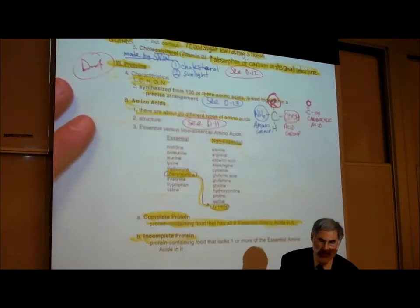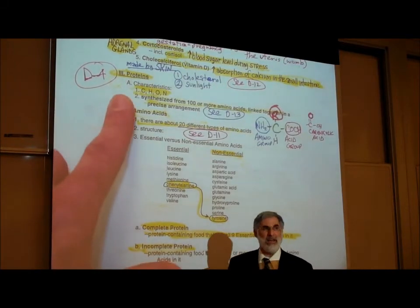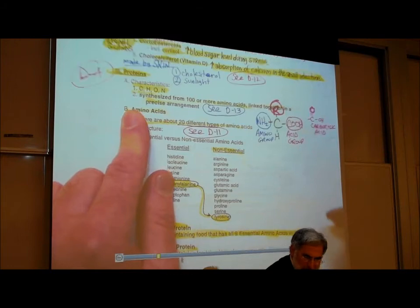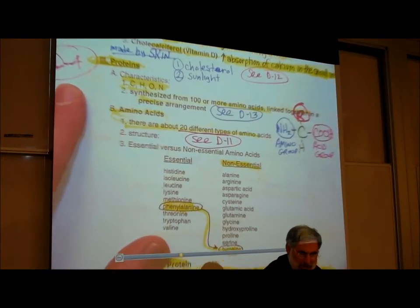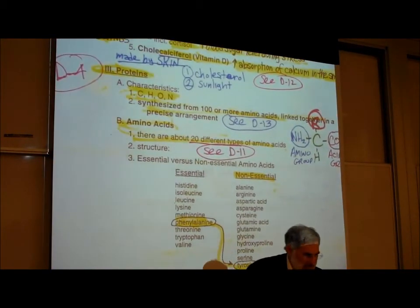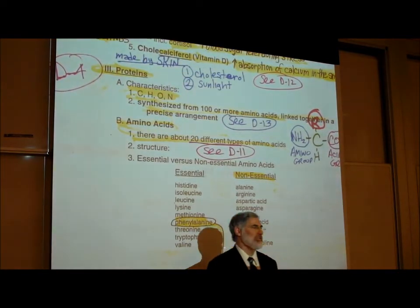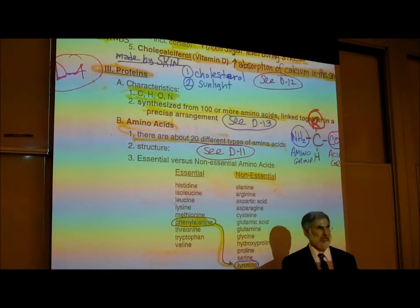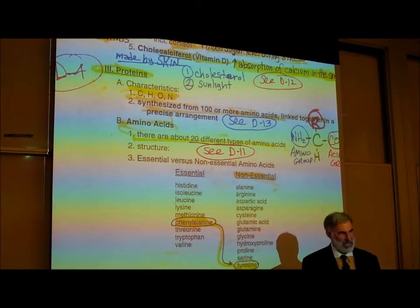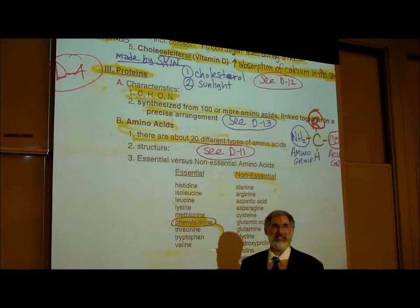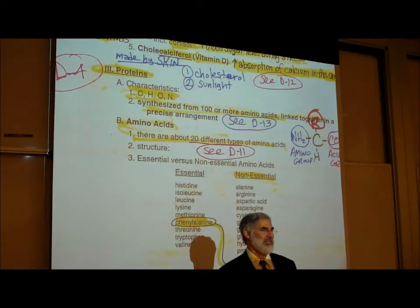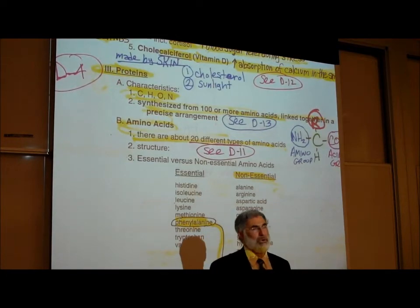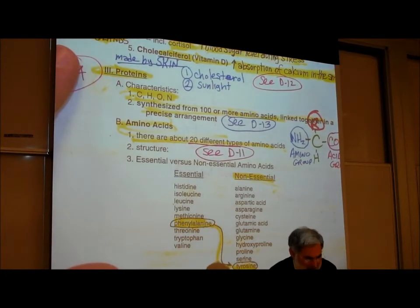That takes us on page D4 to the third category of biologically important organic compounds: proteins. Everybody has heard the word protein — but if I asked what proteins are, most people would say 'meat... protein... meat.' That's not a definition. We've heard the word protein, we know there's some protein in meat, and we have no idea what a protein actually is. So now we're going to learn about it.